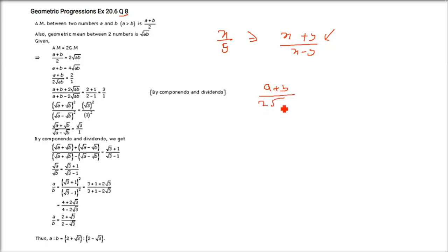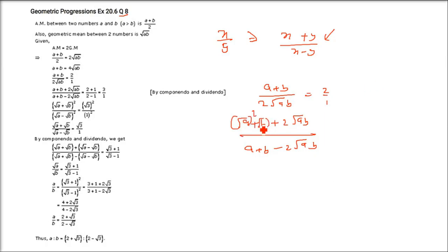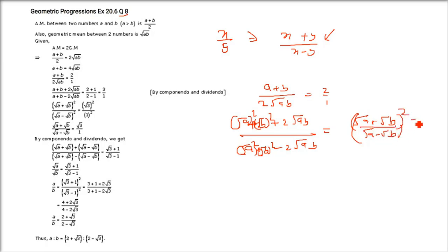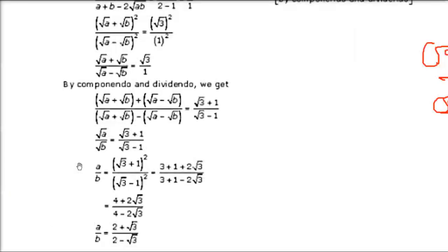Writing a = (√a)², b = (√b)², the numerator becomes (√a+√b)² and denominator becomes (√a−√b)². So (√a+√b)²/(√a−√b)² = 3/1. Taking square roots: (√a+√b)/(√a−√b) = √3/1.